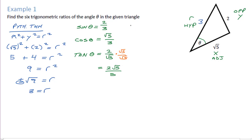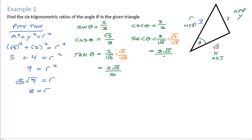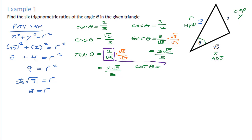For the reciprocal functions, we just flip them. Cosecant, the reciprocal of sine, is 3 over 2. Secant, the reciprocal of cos, is 3 over √5 — we multiply by √5 over √5 to rationalize, giving 3√5 over 5. For cotangent, instead of flipping the final rationalized answer, let's flip the original tan before rationalizing — that puts the radical on top and saves work. There are our six primary trig ratios.